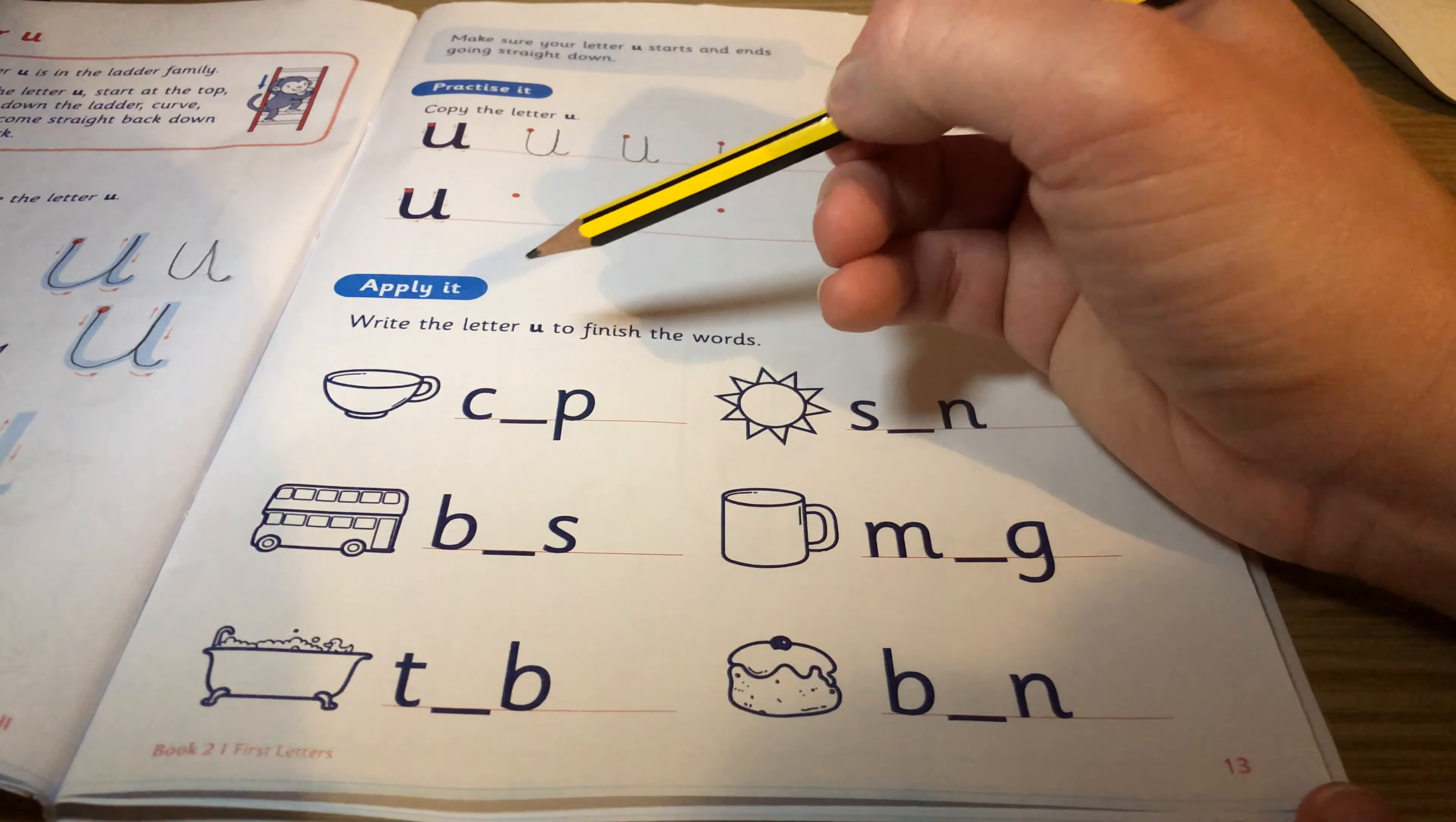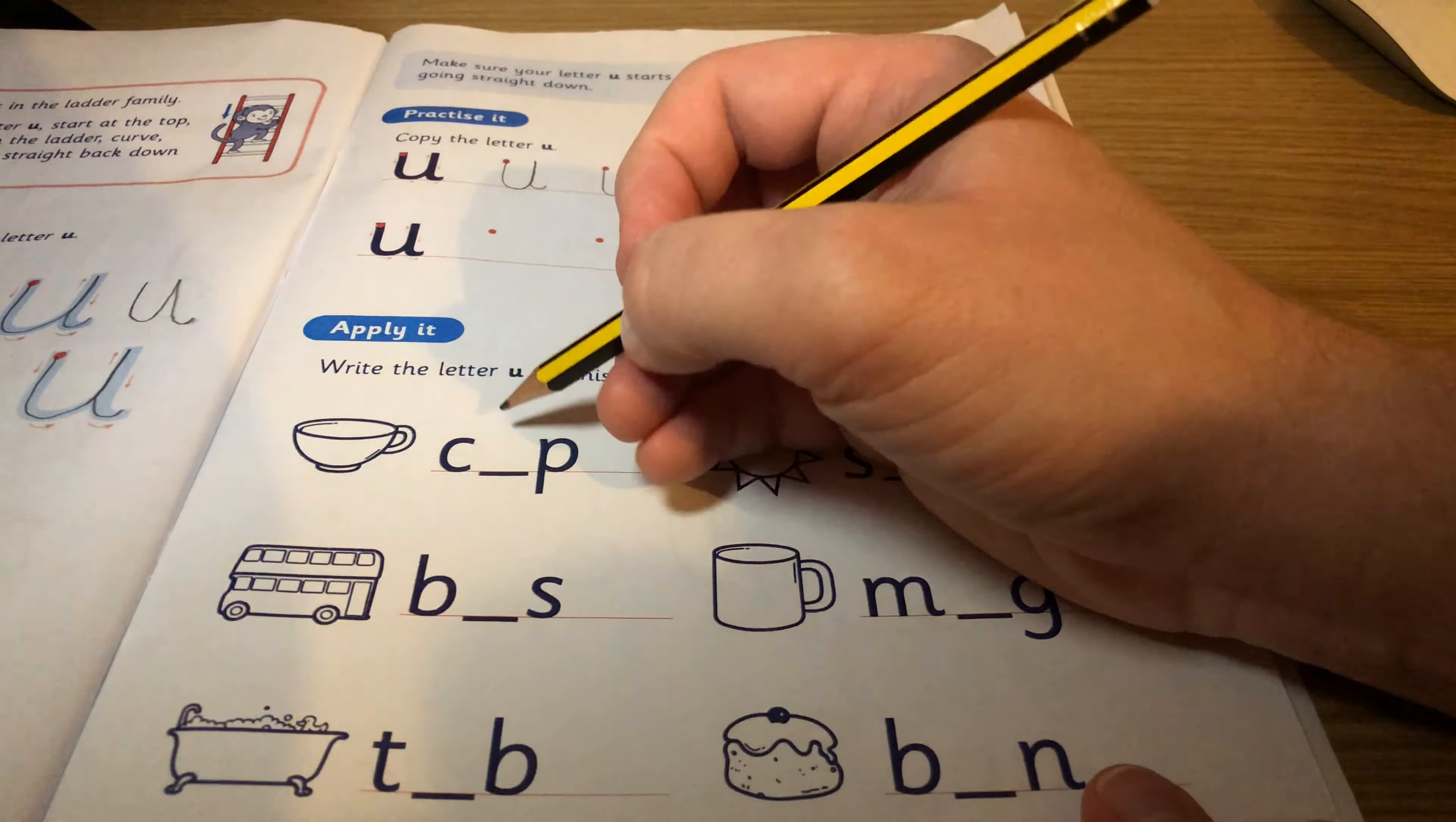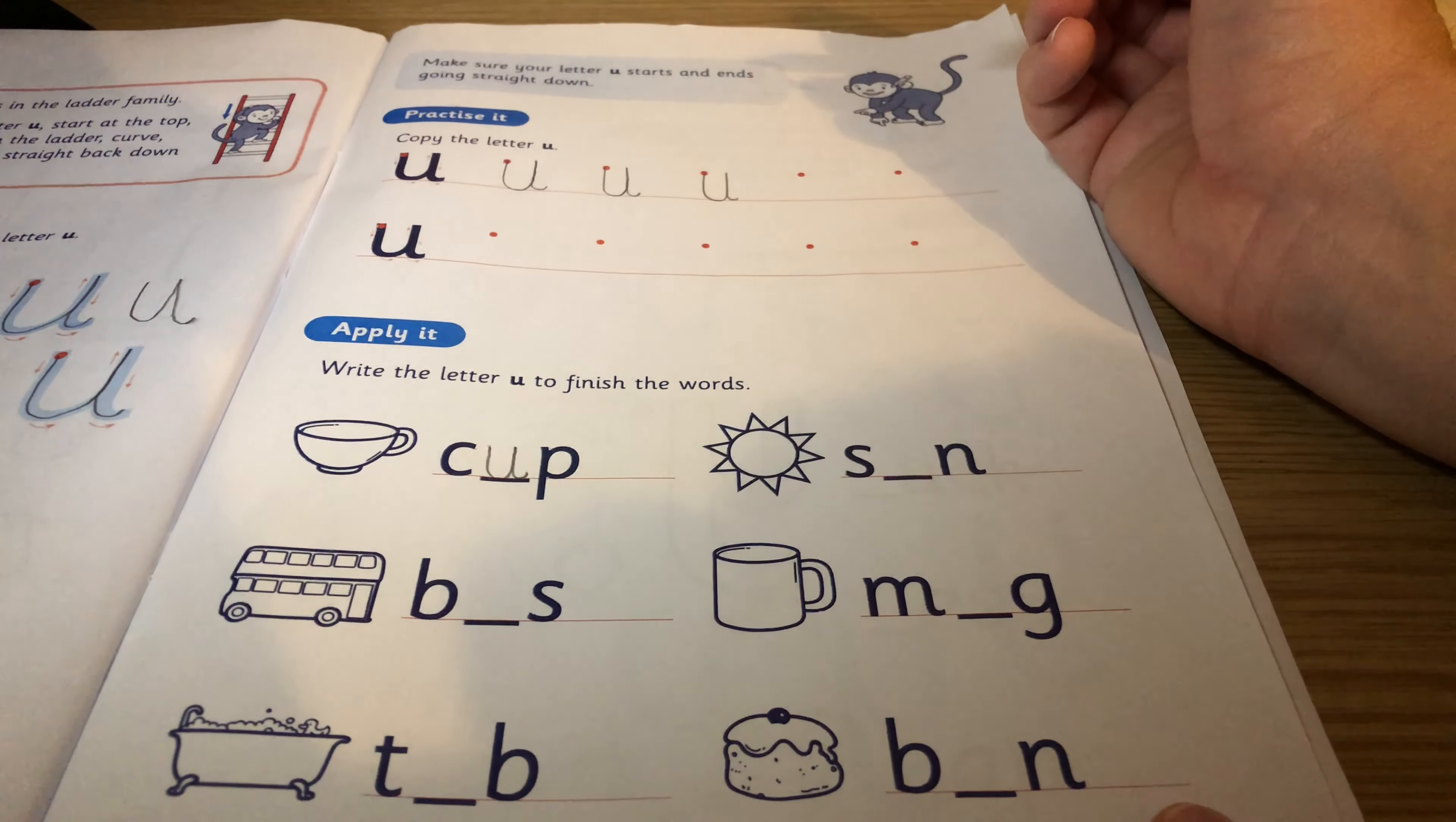Today we'll have a look at the U within words. Now the U doesn't have an ascender or a descender. It's just the normal height letter. So it's got to be the same height as the C and the P here. So I'm going to start at the top, come straight down and curve, straight back up, straight back down, and flick.